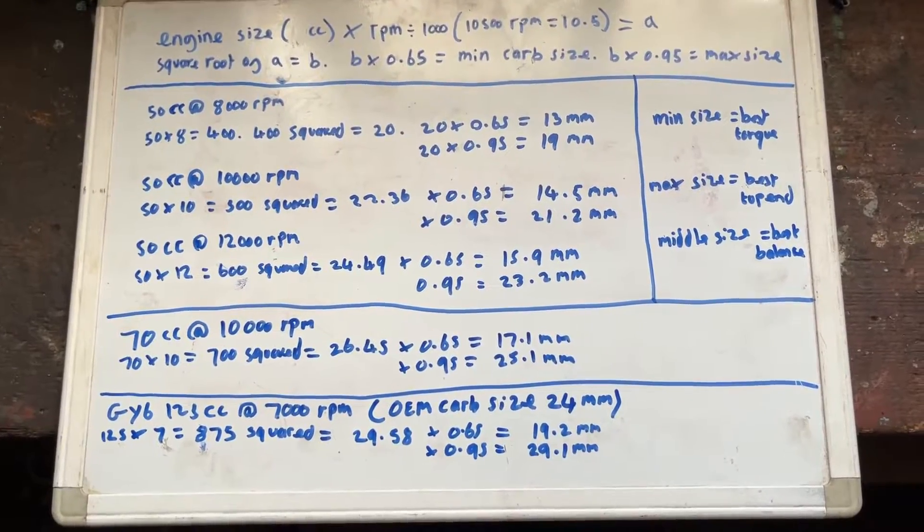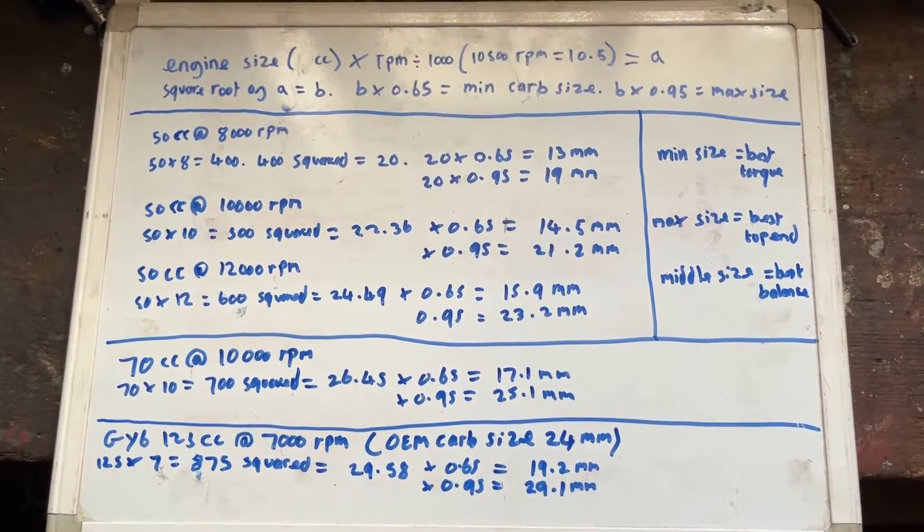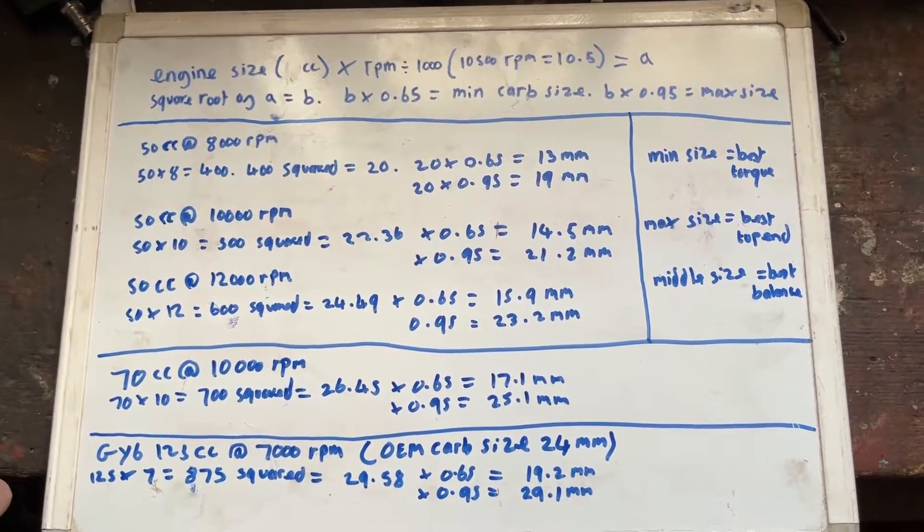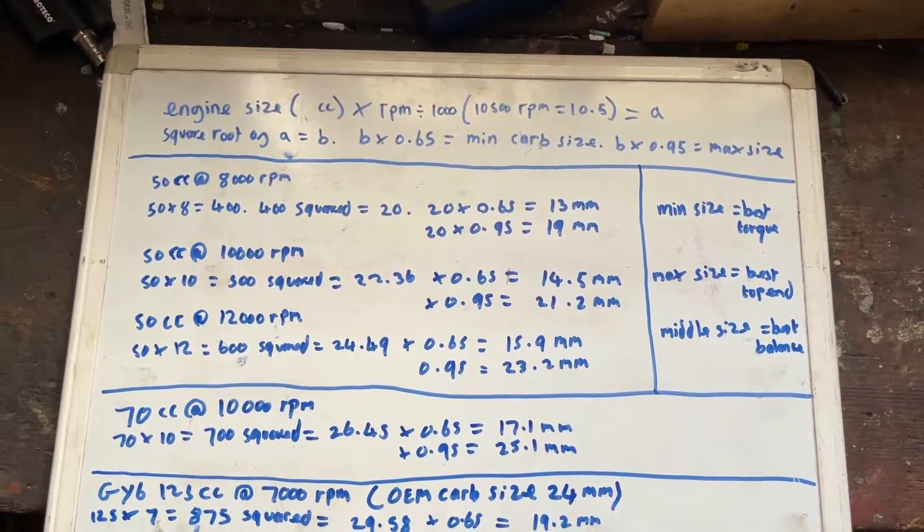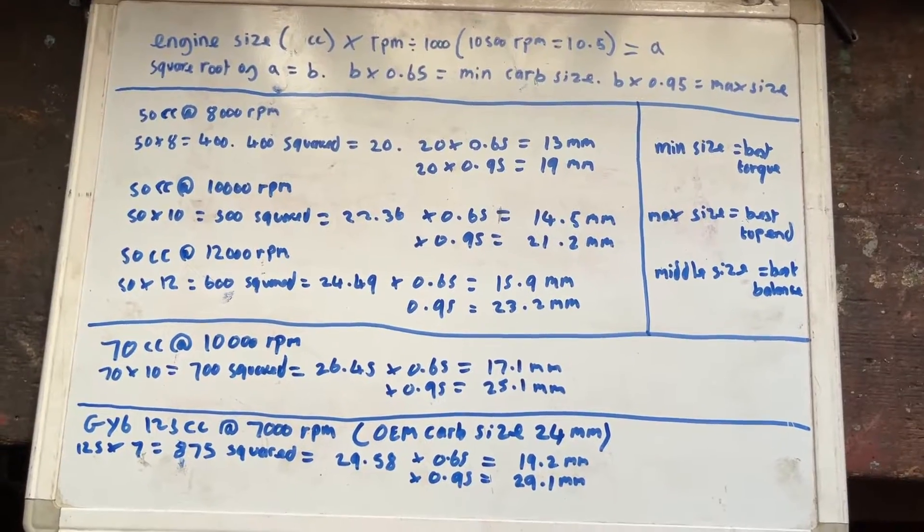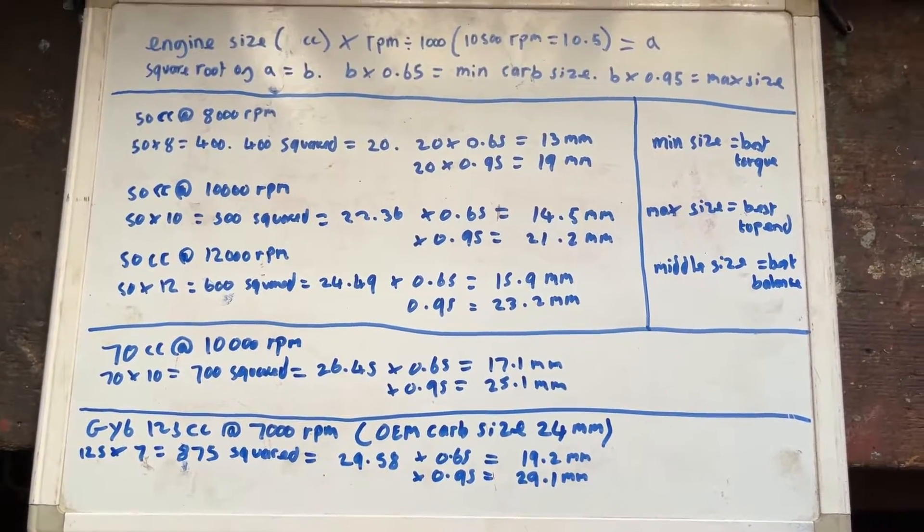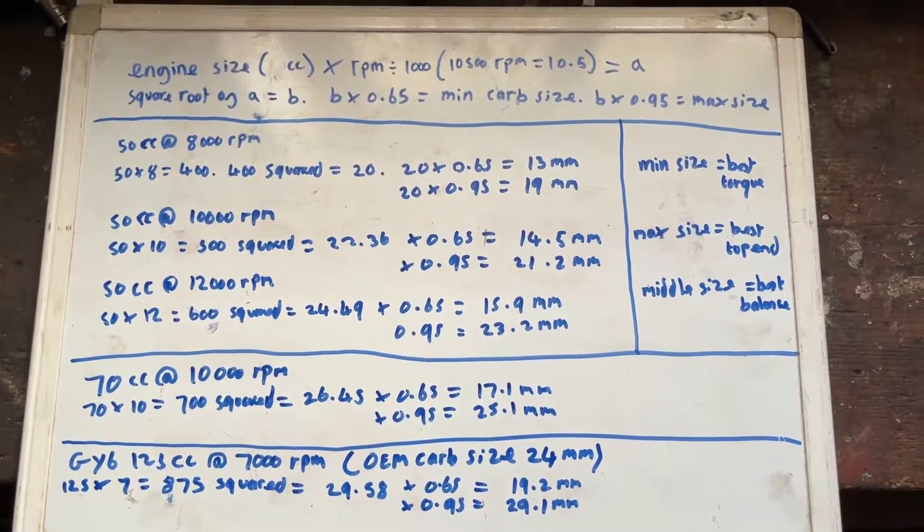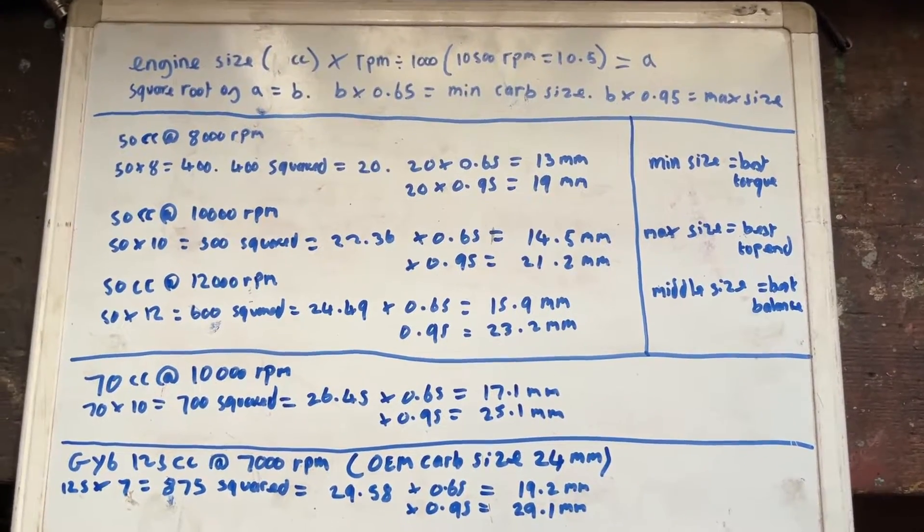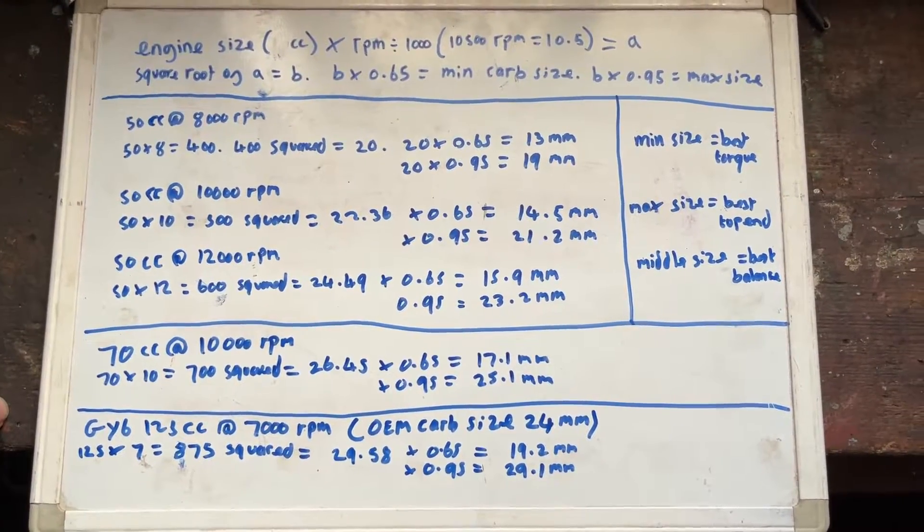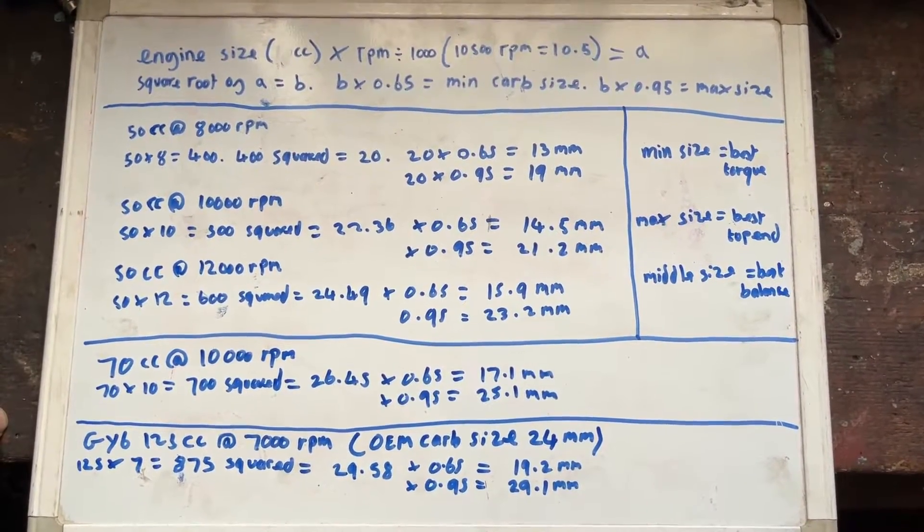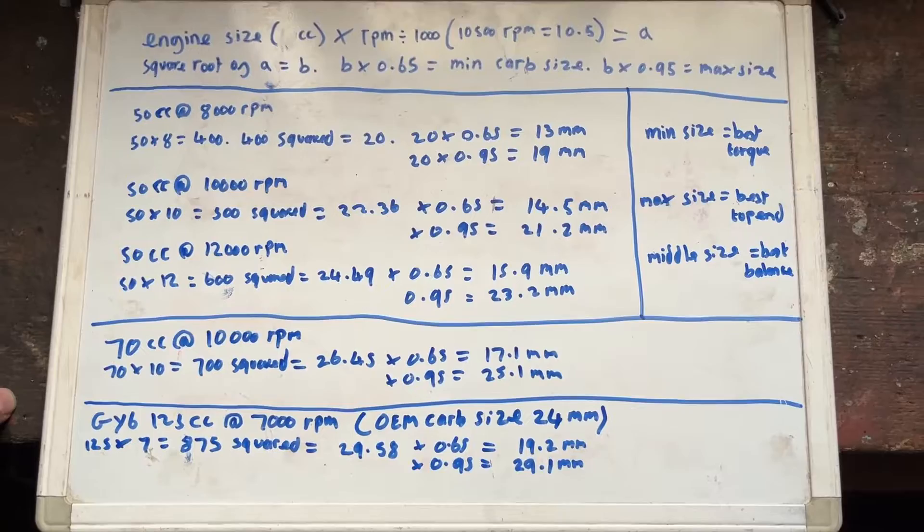In a previous video I spoke about how different sized carburetors will affect your engine's performance. Smaller carburetors will give you better torque, larger carburetors better high-end top speed, but if you go too small or too large it will negatively affect performance. Now that's obviously important to know, but even more useful to know is exactly what is too big and what is too small for your engine.